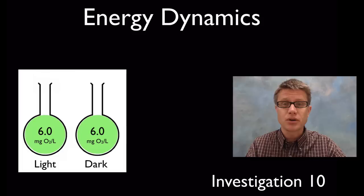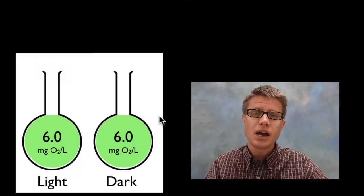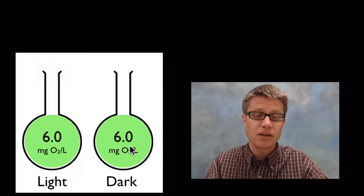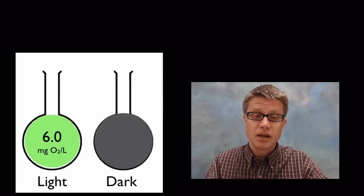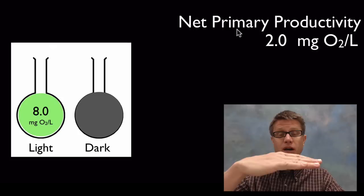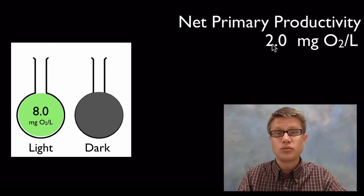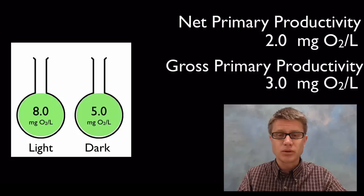In this experiment you're looking at primary productivity of the producers. A good way to measure that indirectly is to measure oxygen they're producing. In this experiment we have two flasks with algae that start with dissolved oxygen level of 6 milligrams O2 per liter. We cover up one, the dark beaker. We apply sun to the other. The oxygen levels go up. We measure primary productivity. Net primary productivity is 2 milligrams of oxygen per liter. That's the amount after the experiment minus the amount at the beginning.